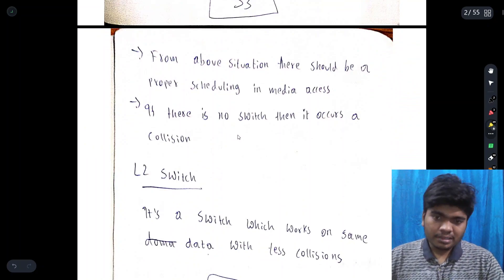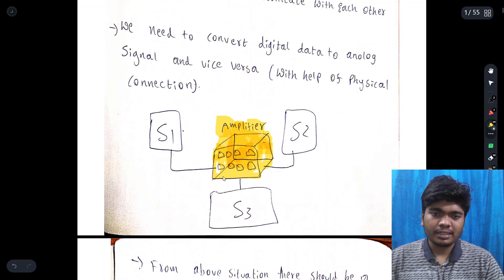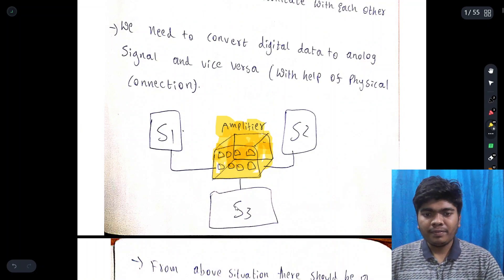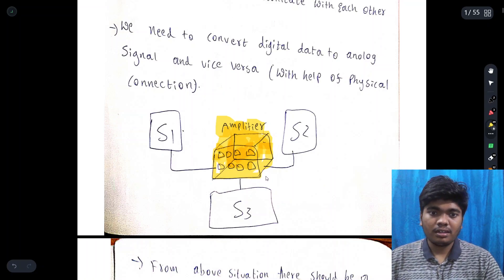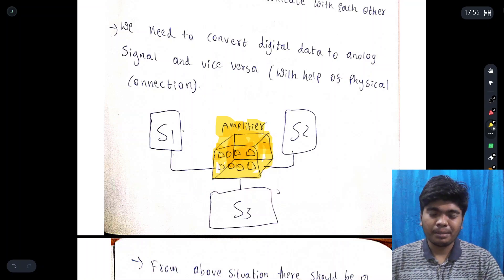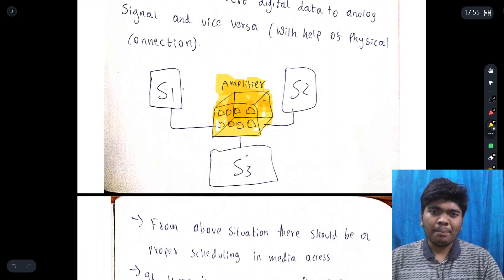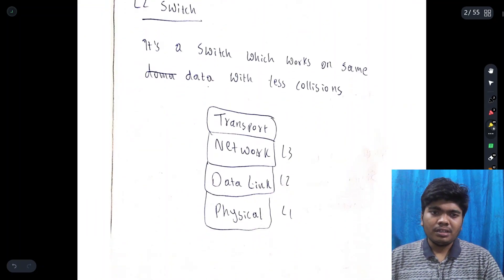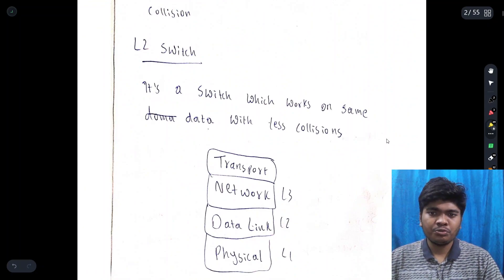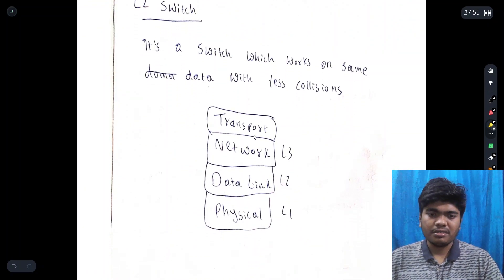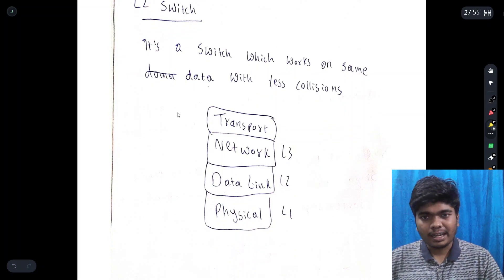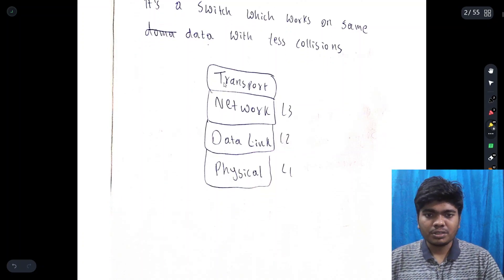If there is no switch then a collision occurs. An amplifier connects between systems, and if three systems are using it at the same time, we need something like switching — otherwise it creates a mess and the amplifier doesn't work properly. There should be some switching conditions. An L2 switch is a switch which works on data with fewer collisions.